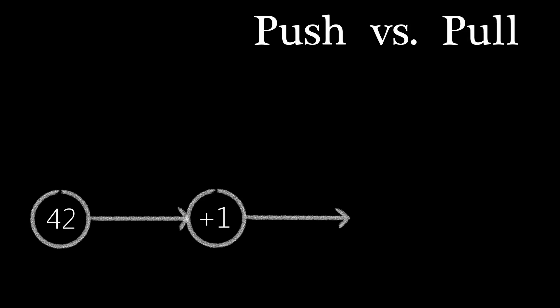In designing a data flow system, you have to decide if you want to use a push or pull model. In the push model, the constant node is evaluated first, putting its data, 42, on the output link.